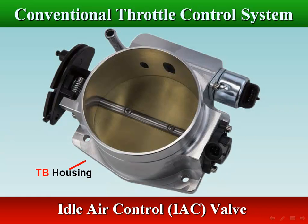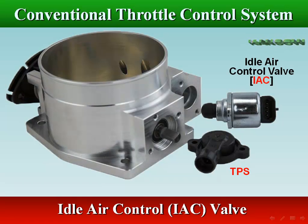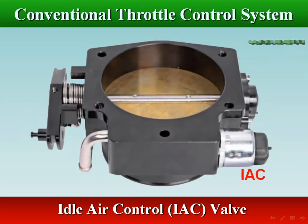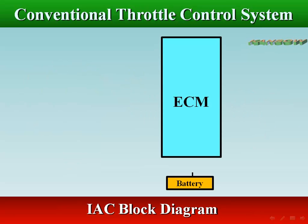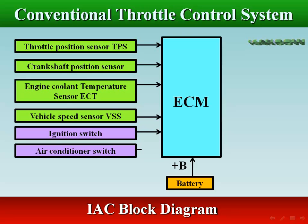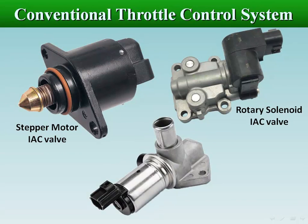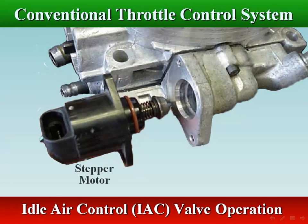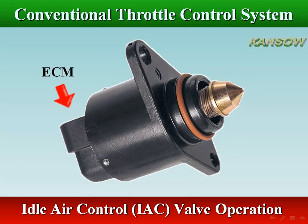An idle air control valve (IACV) literally bypasses air around a closed throttle plate so the engine can get air at idle. According to the signal sent from the ECM, the IACV controls the flow rate of air bypassing the throttle valve during idle. IAC valves are operated by a stepper motor or electric solenoid. The IAC stepper motor has a tapered pintle that seats into a corresponding tapered seat, and the stepper motor moves this tapered pintle in steps into or out of a matching tapered seat, thus varying the amount of air passing through the valve.